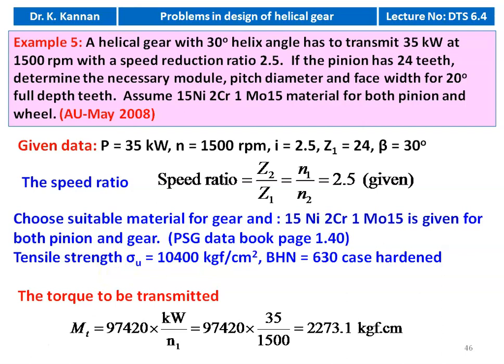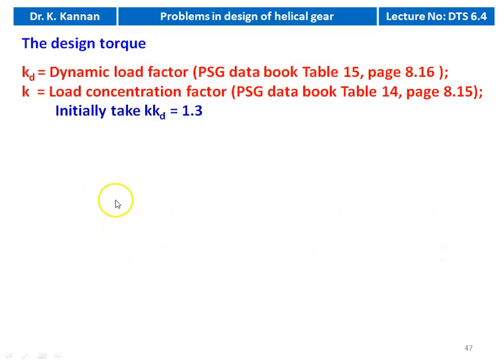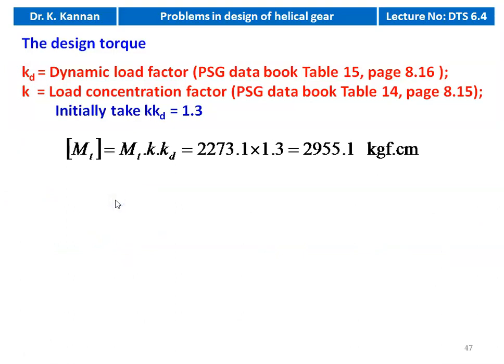We calculate the torque transmitted: MT = 97,420 × (power in kW) / (pinion speed) = 97,420 × 35 / 1500 = 2273.1 kgf·cm. Then the design torque MT(design) = MT × K × KD, where K is the load concentration factor and KD is the dynamic load factor. Initially we take K×KD = 1.3, so design torque = 2273.1 × 1.3 = 2955.1 kgf·cm.